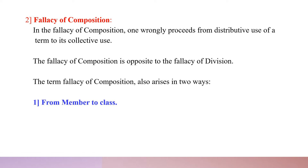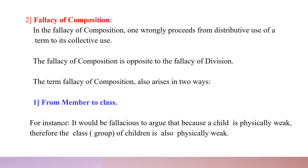The Fallacy of Composition also arises in two ways. First, from member to class. For instance, it would be fallacious to argue that because a child is physically weak, therefore the class of children is also physically weak.